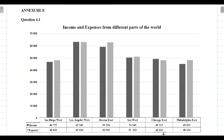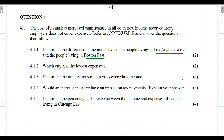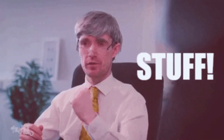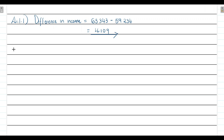So Chicago East is the city with the lowest expenses. Don't rely solely on the bars to give your answer — if actual figures are provided, use those, as they give a more accurate and correct answer. The answer to Question 4.1.2 is Chicago East.